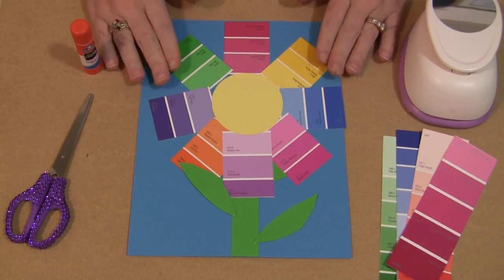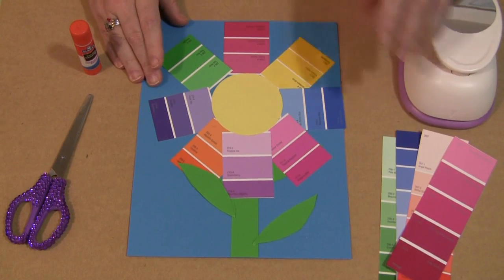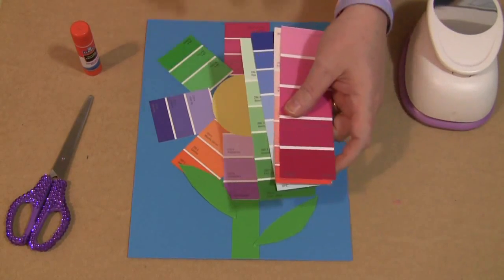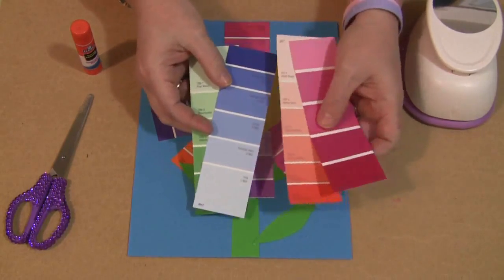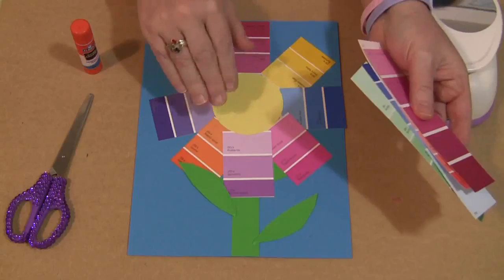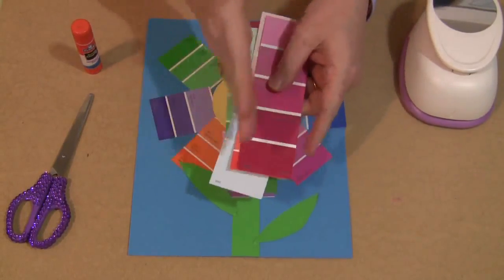You'll need to have paint chips. You can get these free anywhere that they sell paint. I like to use the long strips. They have a variety of different kinds of paint sample styles, paint chip styles, but I like to use these here because they're a good width for the flower petals. They have some that are wider so they can be cut in half like down this way too.